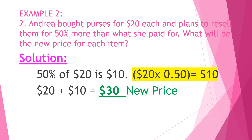Example number two: Andrea bought purses for $20 each and plans to resell them for 50% more than what she paid for. What will be the new price for each item? Solution: 50% of 20 is 10 — that is when we multiply 20 times 0.50 it will give you $10. So $20 plus $10 is equal to $30, which will be the new price.